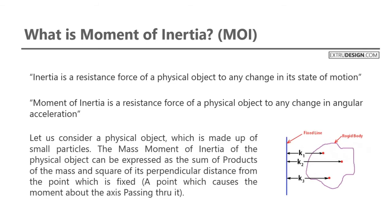Let us consider a physical object which is made up of small particles. The mass moment of inertia of the physical object can be expressed as the sum of products of the mass and the square of perpendicular distance from the point which is fixed, a point which causes the moment about the axis passing through it.